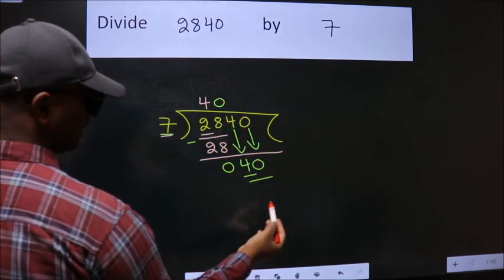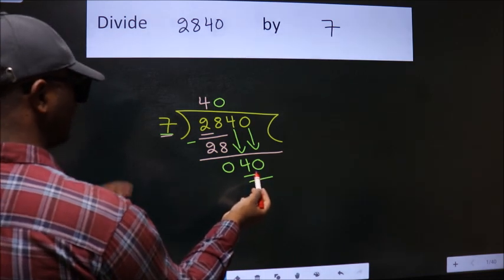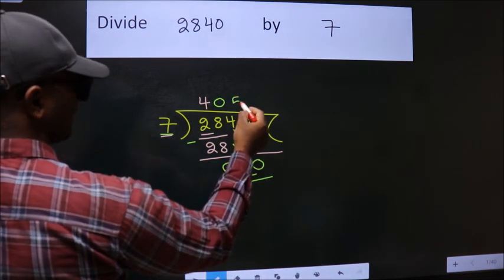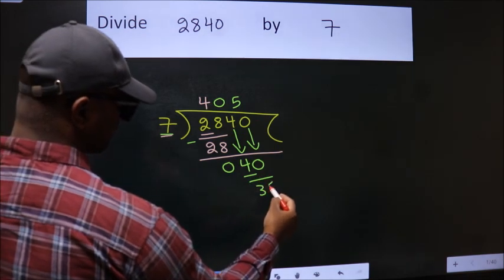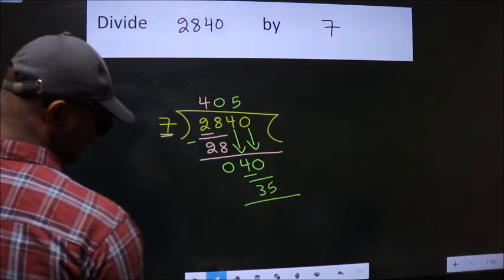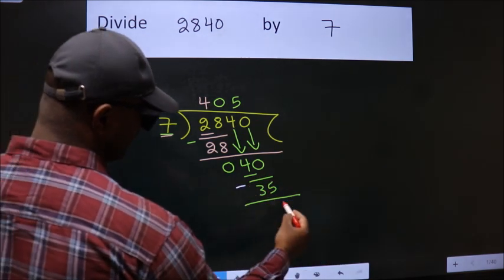So, 40. A number close to 40 in the 7 table is 7 times 5 is 35. Now we subtract. We get 5.